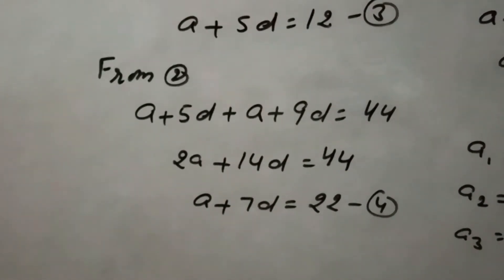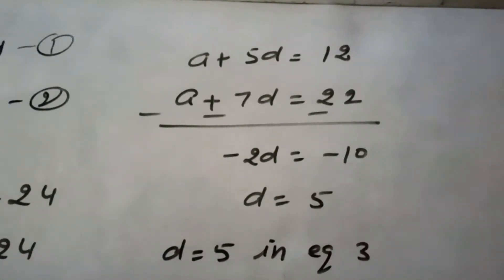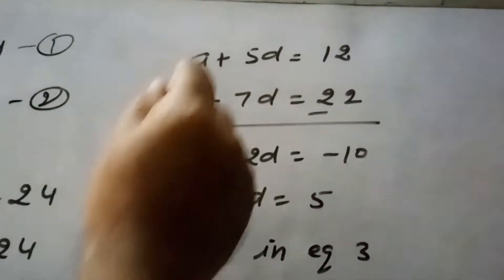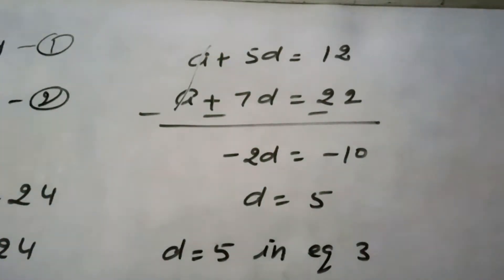Now, subtracting equation 3 and 4, equation 3 is A plus 5D equals 12, and equation 4 is A plus 7D equals 22. So when we subtract this, A and A cancel, so it becomes minus 2D equals minus 10, so D equals 5.